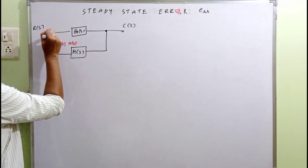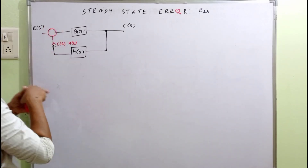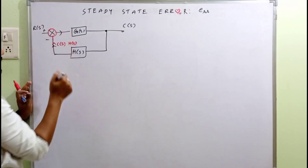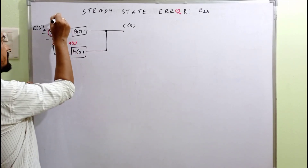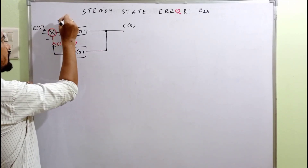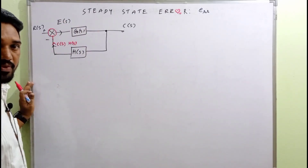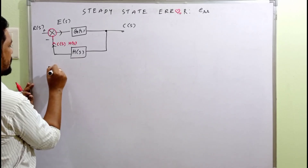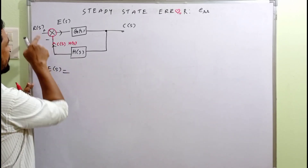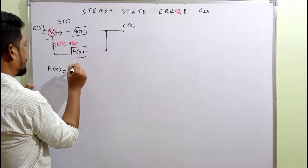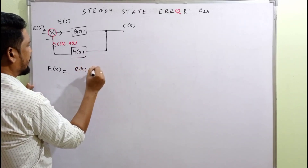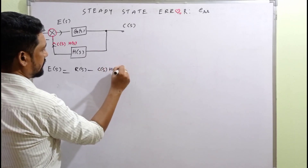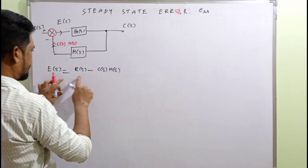After the summing point, whatever signal is flowing — positive or negative — that will be the error function E(s), in the Laplace domain. The equation is: E(s) = R(s) minus C(s) into H(s). This is the signal and this is the equation.